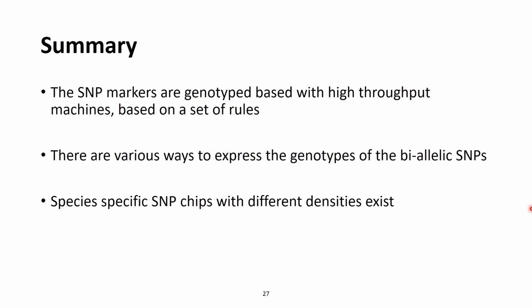SNP markers are genotyped with high-throughput machines that determine the genotype of these SNPs in a cost-efficient manner. At the end, what we get are large text files that could be further analyzed. These text files have various ways how the SNPs are expressed for biallelic SNPs — various nucleotide or numeric coding — and there are also various possibilities for how missing data is denoted.